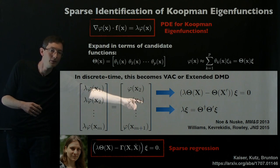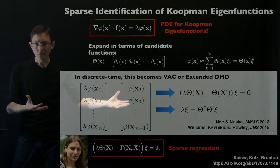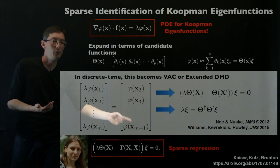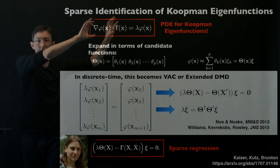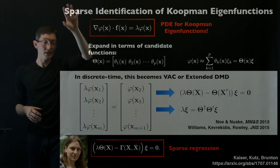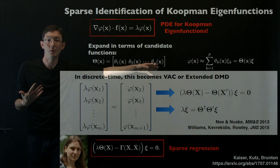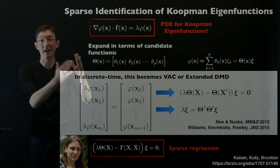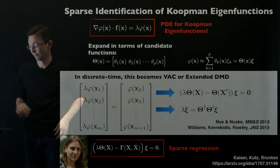The VAC method of Noe and Nuski in 2013, or the extended DMD method of Williams, Keverkidis, and Rowley 2015, is basically this sparse identification in discrete time. You can essentially get sparse VAC or sparse EDMD models as well. But we're really trying to identify eigenfunctions directly instead of these big linear operators.